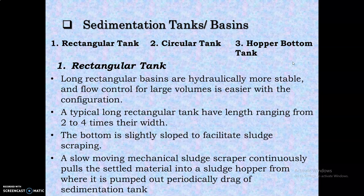A typical long rectangular tank has a length ranging from two to four times its width, and its bottom is slightly sloped to facilitate sludge scraping. A slow-moving mechanical sludge scraper continuously pulls the settled material into a sludge hopper from where it is pumped out periodically.